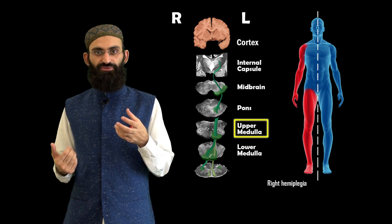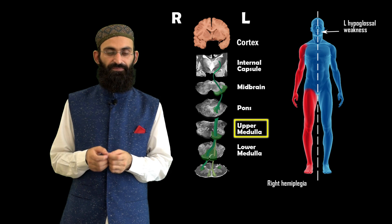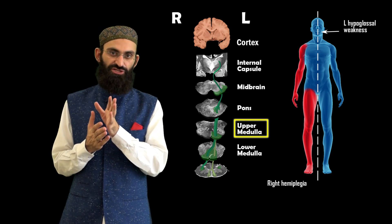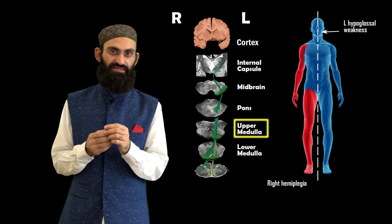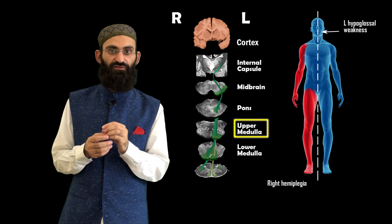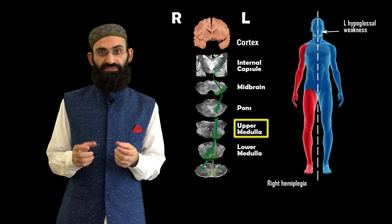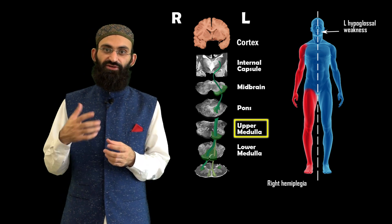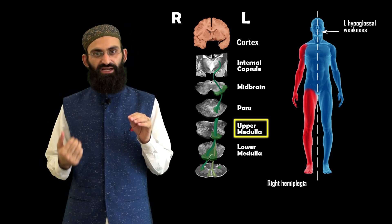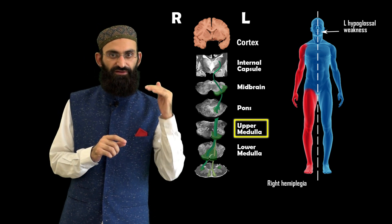In a left medullary lesion, in addition to right-sided hemiplegia, there can also be left hypoglossal weakness. In hypoglossal weakness, the tongue deviates to the same side as the lesion. Since tongue deviation indicates the side of hypoglossal weakness, it is said that the tongue never lies. Left hypoglossal weakness combined with right-sided hemiplegia localizes the lesion to the left medulla.